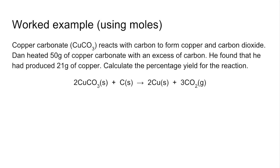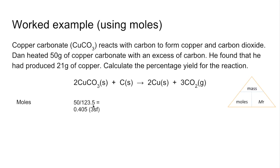The first thing we're going to do is work out how many moles of copper carbonate Dan has in 50 grams. Using the formula triangle, moles equals mass divided by Mr. Dan's got 50 grams and the Mr of copper carbonate is 123.5, so that's 0.405 moles to three significant figures. A word of warning: don't double the Mr of copper carbonate — moles is mass over Mr, not mass over two times the Mr.